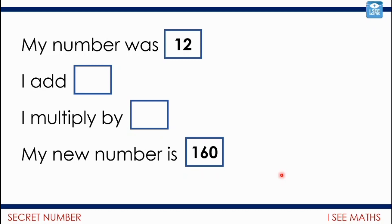But let's say my number was 12. And then I added something, and I multiply by something, and my new number is 160. Now what might have happened? What could I have added and what might I have multiplied by? So see if you can find one way or even different ways that could be done. Pause the video. Have a go.